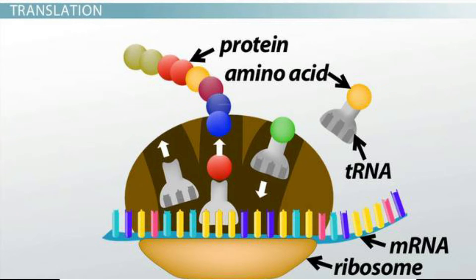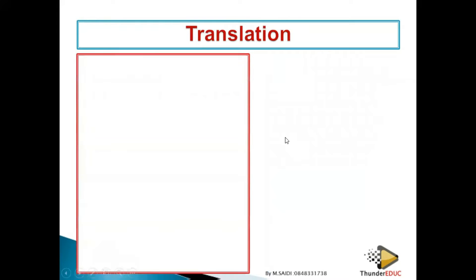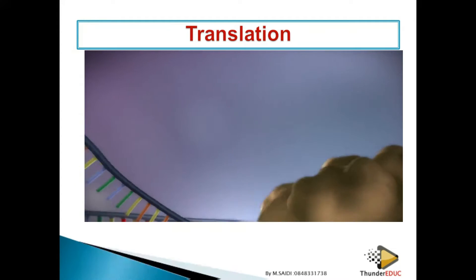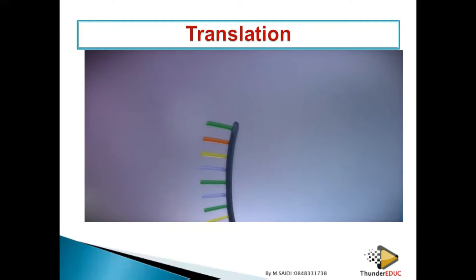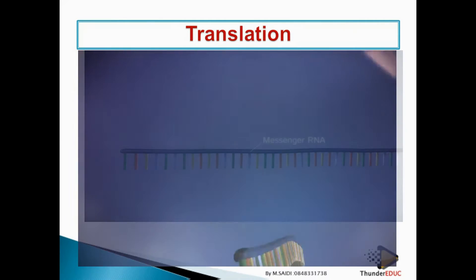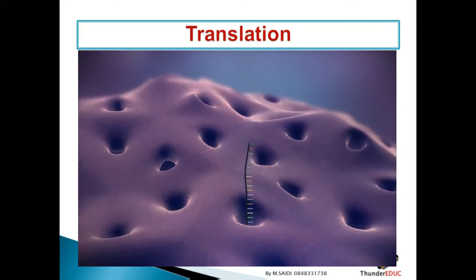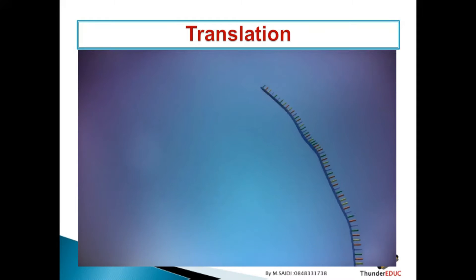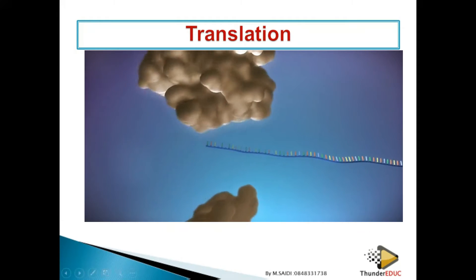Welcome back to class. Today we are going to be looking at the process of translation. The messenger RNA has moved out of the nucleus, gone to the cytoplasm, and then it attaches itself on the ribosome. Now we want to bring the amino acids to the ribosome so that a chain is formed.